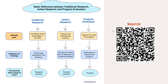In terms of utilization of findings: under traditional research, you use findings to fill the gap identified in the literature. For action research, you use the findings to develop an action plan to address the practical problem. For program evaluation, the focus is to use the findings to understand or improve a specific program, or sometimes to help develop one. Regarding the problem requirement: traditional research requires a research problem identified in the literature; action research requires a practical problem; and program evaluation requires an existing or to-be-developed program.